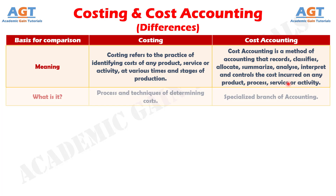Number two: costing covers the techniques and process of ascertaining the cost incurred in production. As against, cost accounting refers to that type of accounting which includes costing, application of cost control methods and computation of profit.